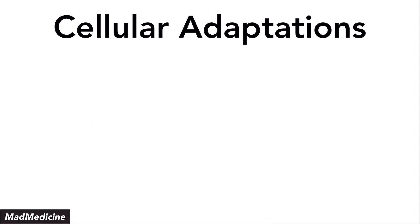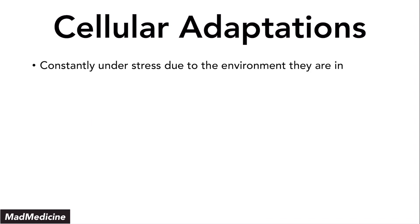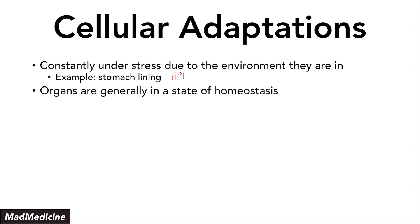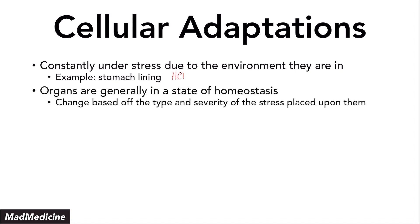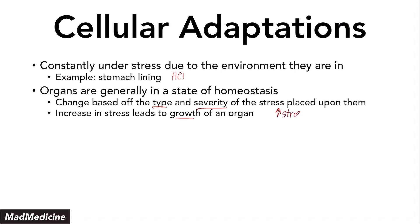Our cells are constantly under a lot of stress because of the environment that they are in. For example, your stomach lining is constantly being eroded because of the hydrochloric acid in your stomach. When it comes to our organs, they're in a state of homeostasis, but they can change if put under a lot of stress. The type and severity of stress is going to determine how they adapt — an increase in stress will lead to an increase in the growth of an organ.